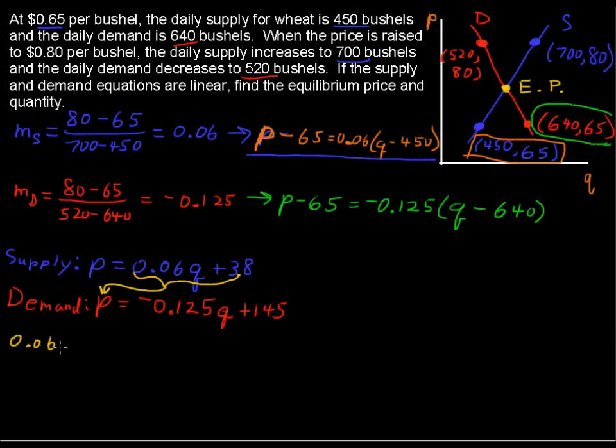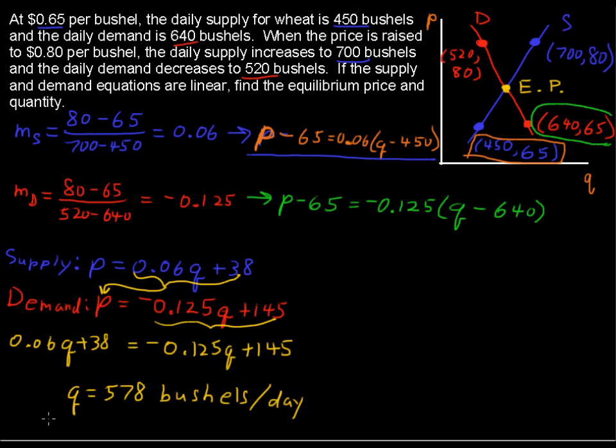I'm going to say 0.06q plus 38 equals negative 0.125q plus 145. And just not to belabor this and take too long of your time, you can solve for q here. And the q, the quantity, will be 578 bushels per day. That's the equilibrium.